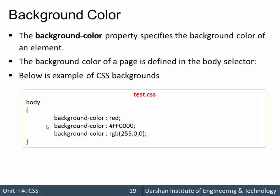We can specify background-color using a predefined set of colors, the rrggbb hex format, or the RGB function in CSS which specifies red, green, and blue values ranging from 0 to 255, giving us access to a wide range of colors.